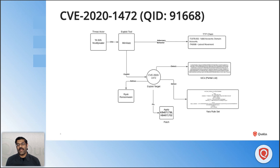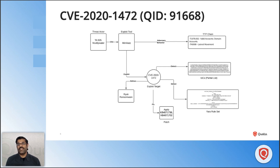The Ryuk ransomware gang has also exploited this vulnerability using Mimikatz. After compromising the primary domain controller, they perform lateral movement to the secondary domain controller, then move to backup servers and plant Ryuk ransomware, sending out ransom demand notices. Astonishingly, the time from initial compromise to planting ransomware using this vulnerability is only seven minutes, making it an extremely critical vulnerability with a publicly available exploit tool.